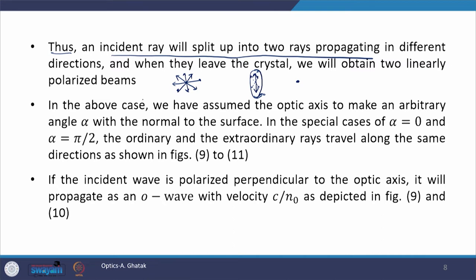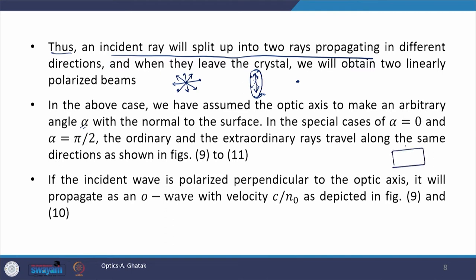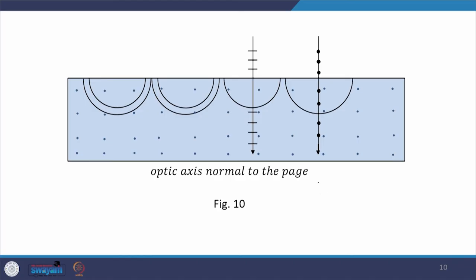In the case discussed so far, we assumed the optic axis makes an arbitrary angle alpha with the normal to the surface. There are two special cases: when alpha = 0 (optic axis along the normal to the interface) and when alpha = π/2 (optic axis perpendicular to the normal). In these two special cases, both the O ray and the E ray travel along the same direction, as also shown in figures 9 and 10.